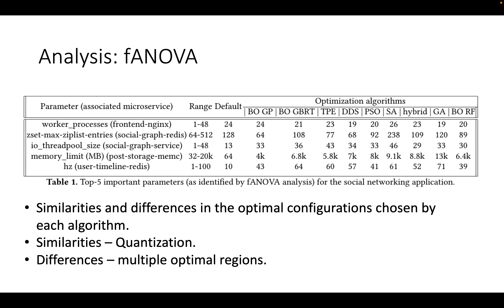In this slide, we understand how different optimization algorithms assign values to some of the important parameters for the social networking application. We use FIOVA technique to first find what are the important parameters of the application. Although FIOVA provides the top parameters, we do not use it as a dimensionality reduction technique as it is a costly process. In Table 1, we see the top five parameters of the social networking application as obtained by FIOVA analysis, along with their range, default values, and the values assigned by different optimization algorithms.